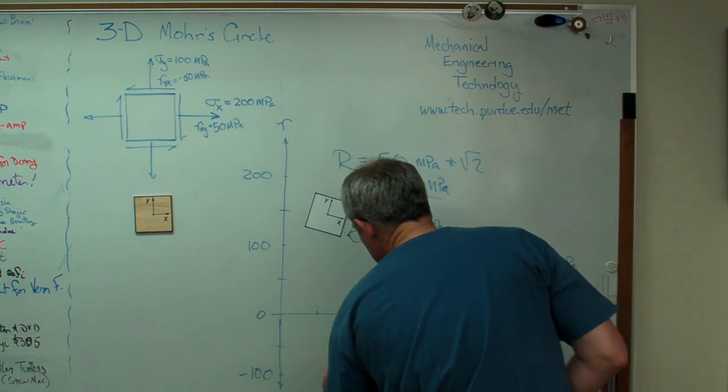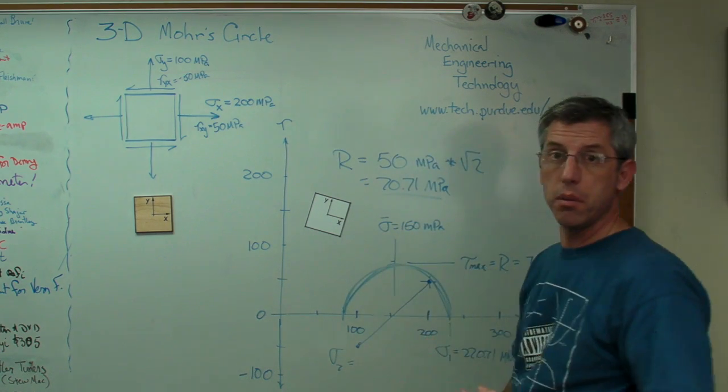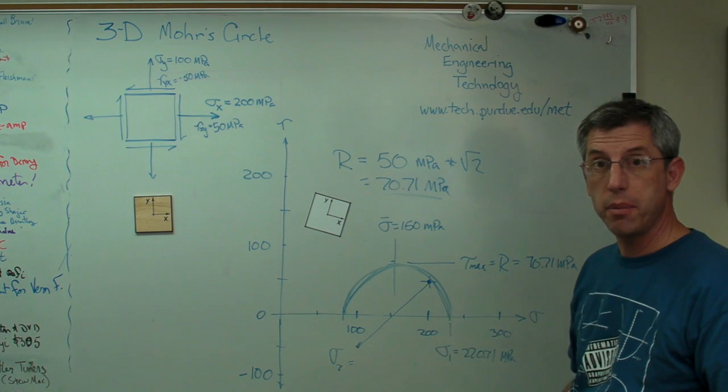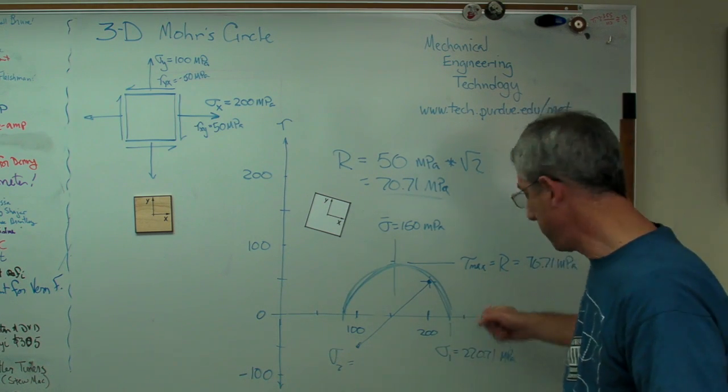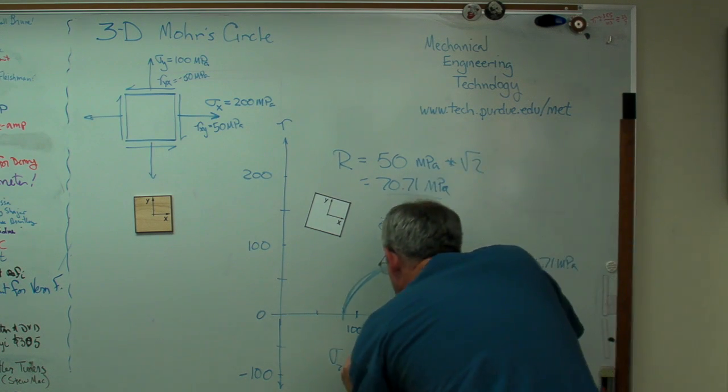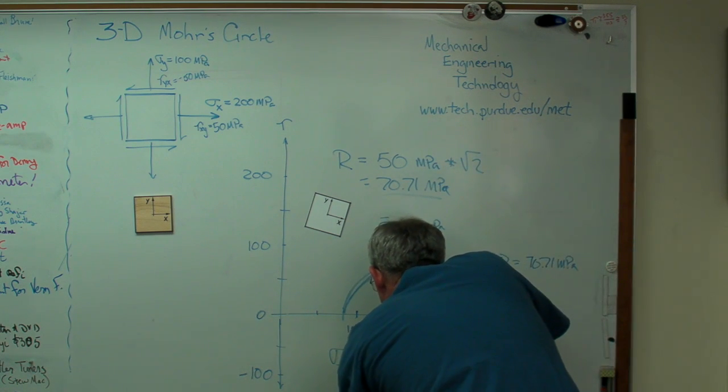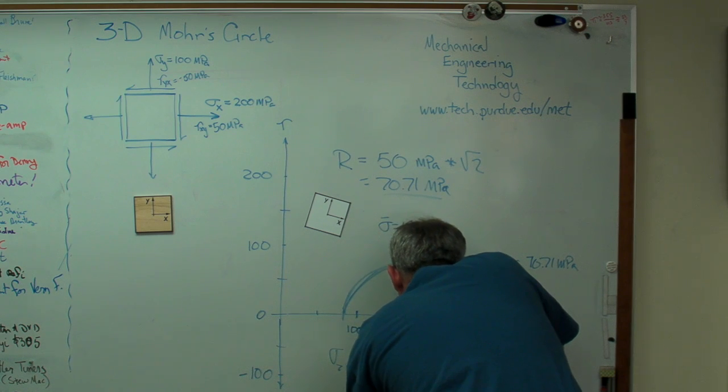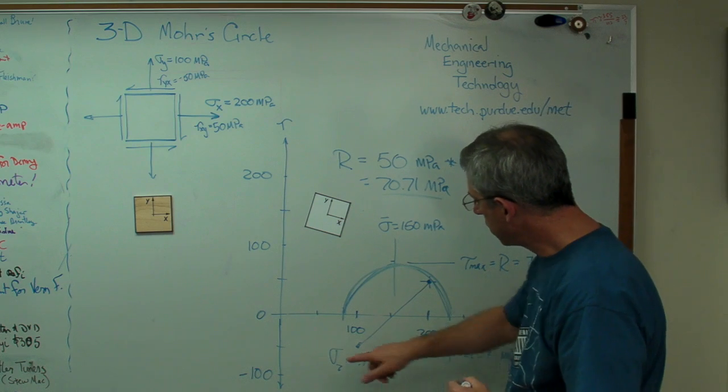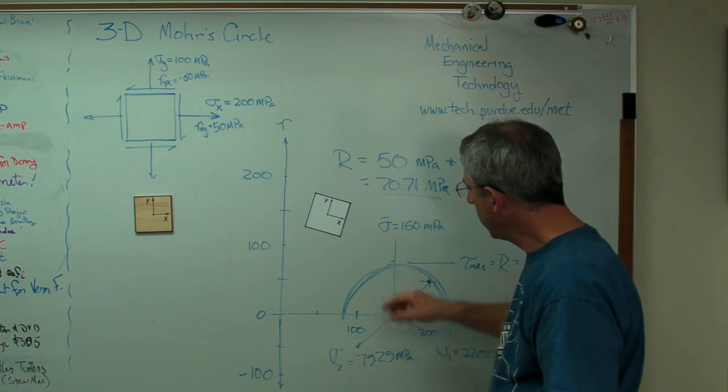So I drew it this way out of convenience. That was just probably how I had my coordinate system defined. And let's call that 22.5 degrees. If I rotate this element clockwise 22.5 degrees, the x face now sees 220.7 megapascals. Now, the sigma 2, the minimum possible normal stress, is going to be 150 megapascals minus the radius. When you do that, you get 79.29 megapascals. That's 150 minus 70.71. So that's sigma 2.